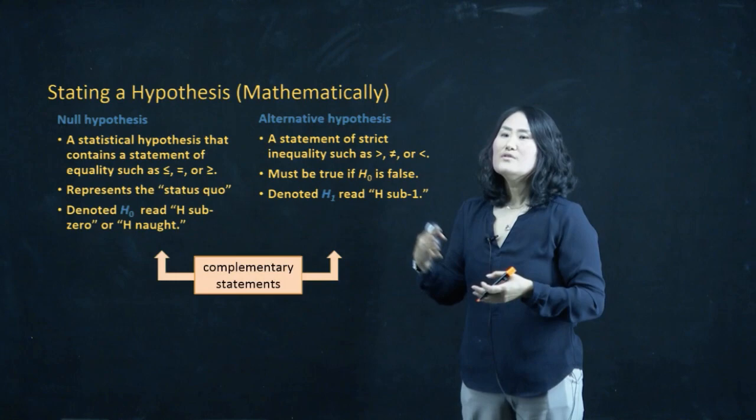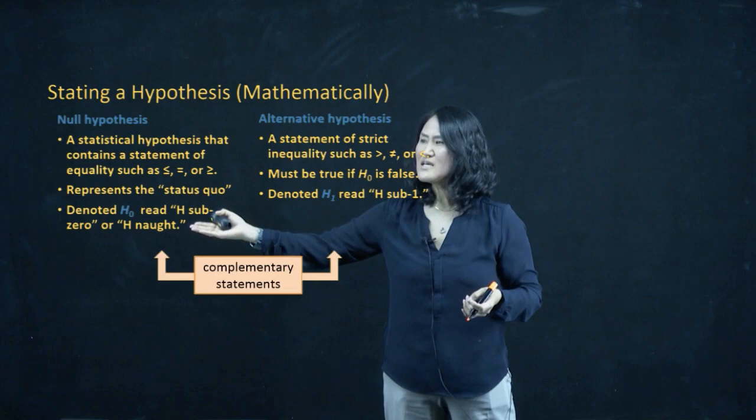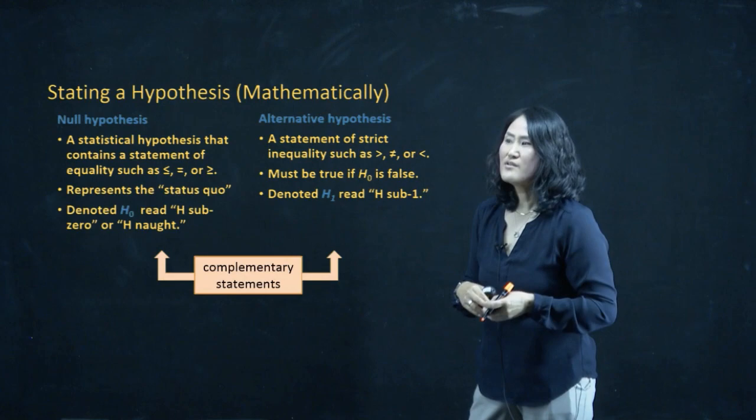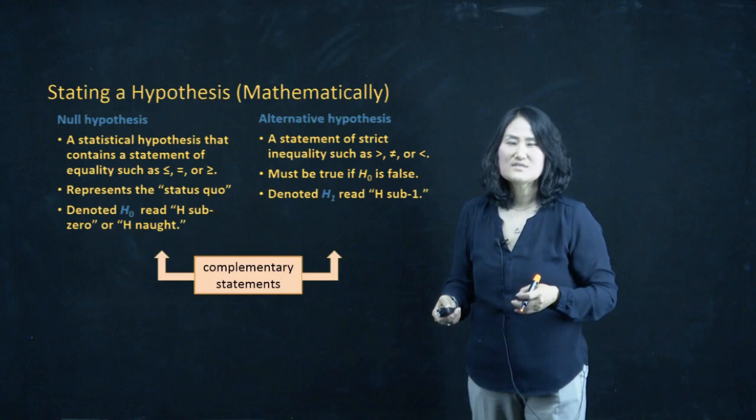The null hypothesis always has an equality sign — the equality sign is there in your mathematical form, and that's the null. The alternative does not have an equality sign. Let's take a look at some examples so we can practice.